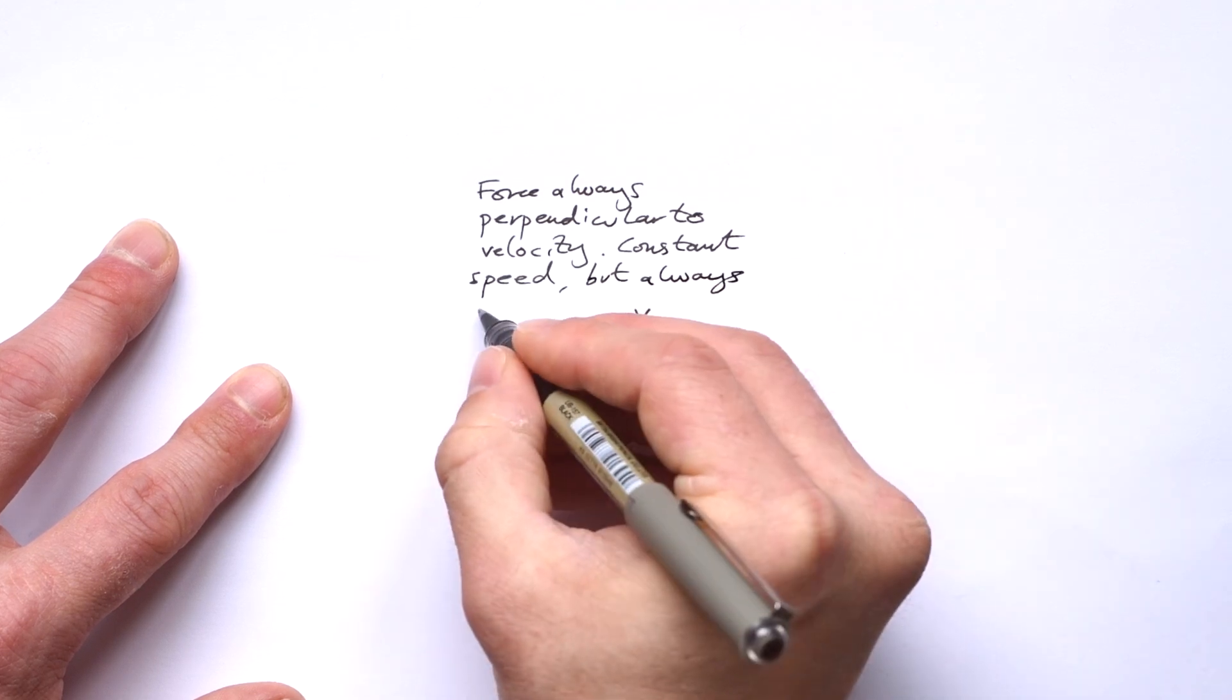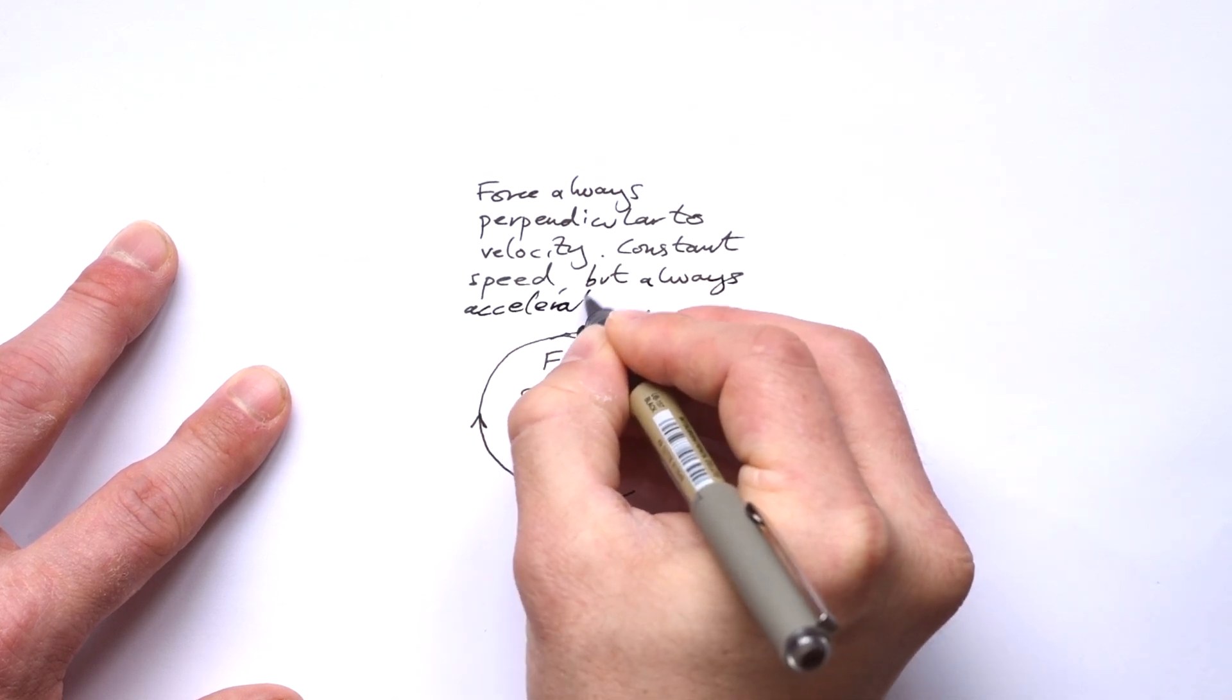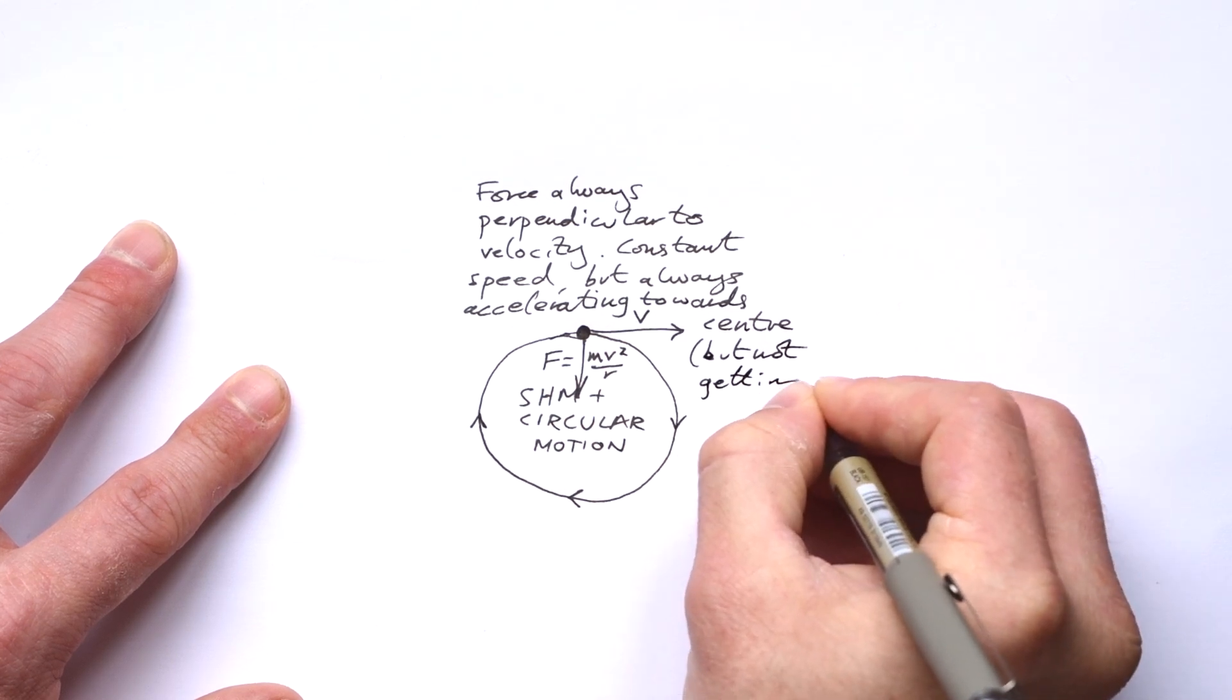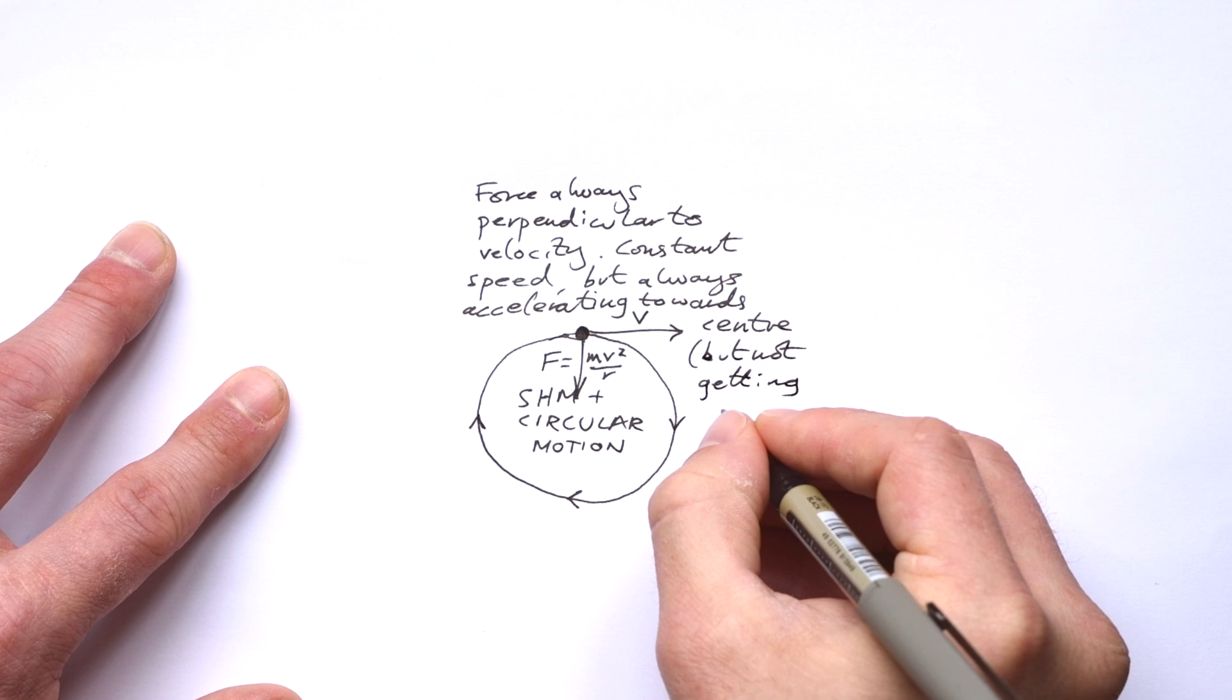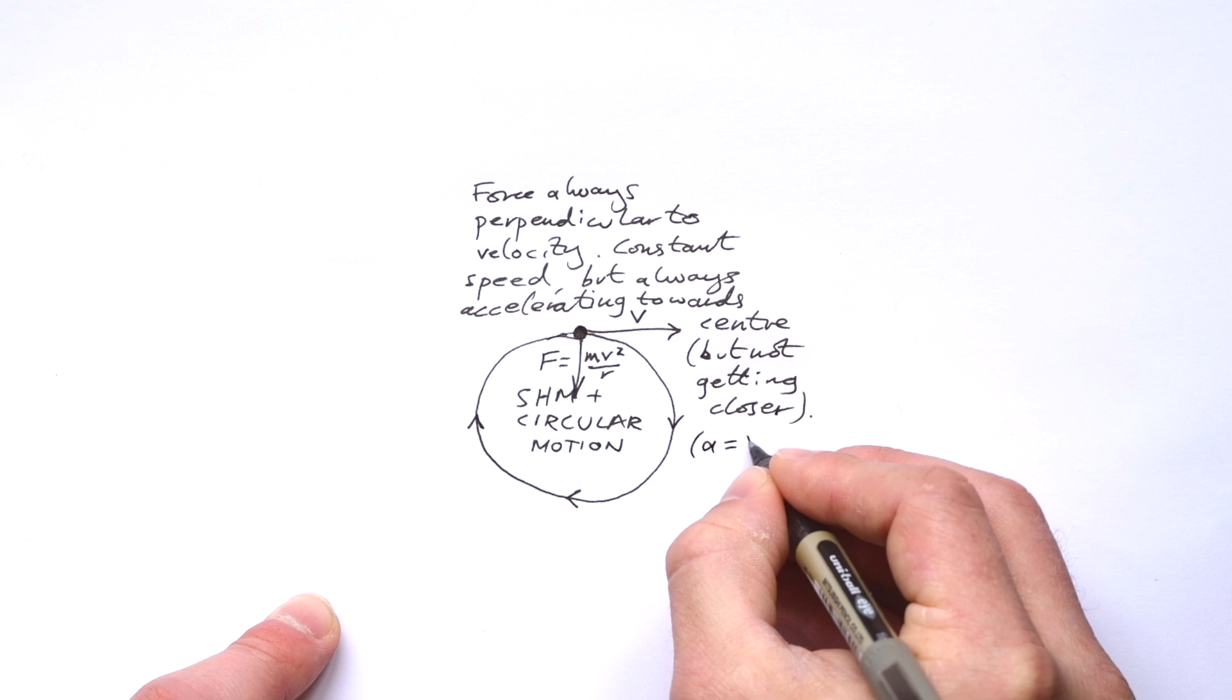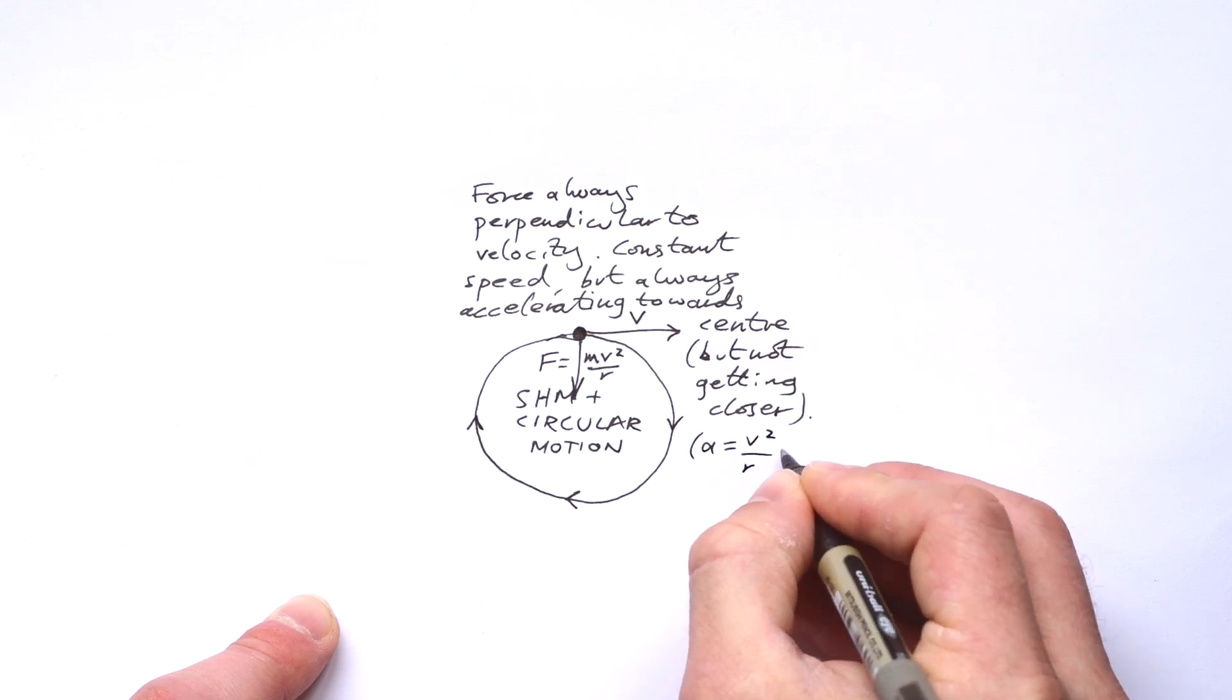And actually, that's the only condition needed for circular motion to happen. Because the force is at right angles to the velocity, that means that we have a constant speed, but it's always accelerating towards the center without actually getting closer. And if F equals mv squared over r, then that means acceleration is just v squared over r.